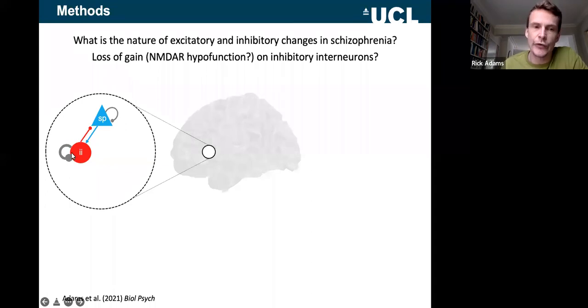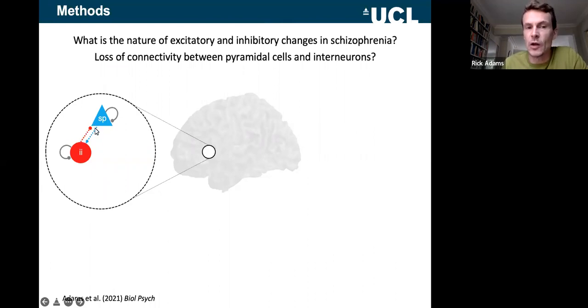Alternatively, there may be a loss of excitability of interneurons causing a disinhibition of pyramidal cells. This picture is favoured by the ketamine-based hypothesis of psychosis. Or there could just be a loss of connectivity between these two cell populations, synaptic pruning.